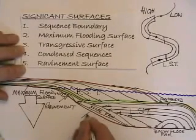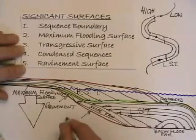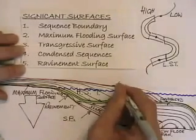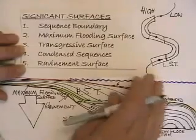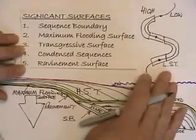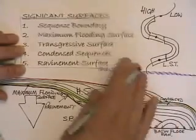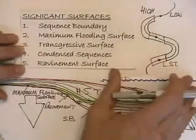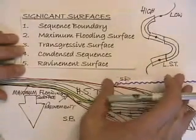So this is a sequence boundary here, which is an underlying surface, an Sb. And there's an Sb up here, which is related to the fall of sea level. So those are the bounding surfaces to a sequence.